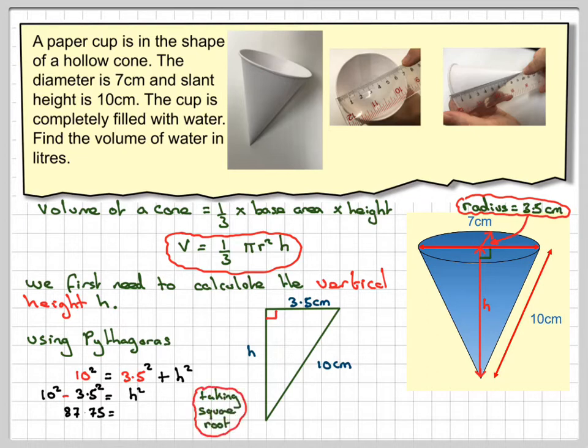And to find h, we need to take the square root. So the square root of 87.75 is 9.3674. We'll keep that on our calculator.